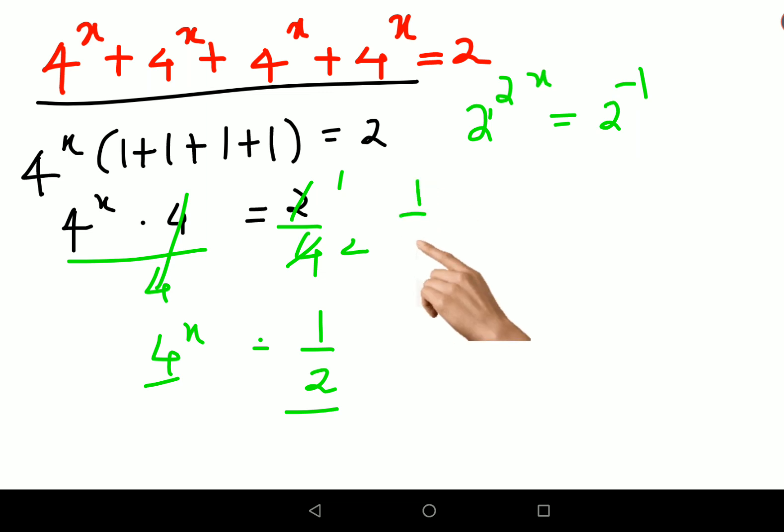Because see 1 upon a can also be written as a raised to minus 1. So using that logic over here we will have 2, since the bases are same, see here 2 and 2. So I can say that 2x equals to minus 1. Therefore I can say value of x is nothing but minus 1 upon 2.